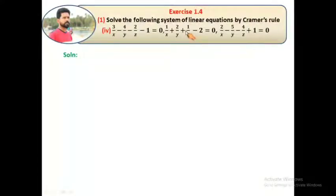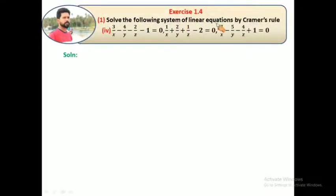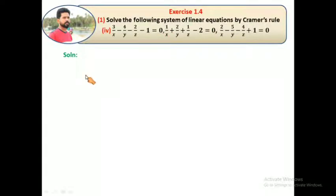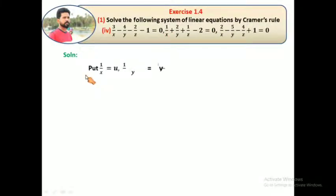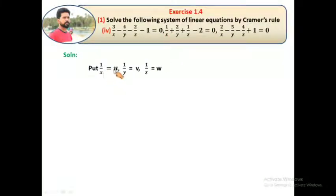Hi students, now watching Exercise 1.4, first question, fourth part — solve the following system of linear equations by Cramer's rule. They are given three equations. Looking at the fractions, we let 1/x = u, 1/y = v, and 1/z = w.